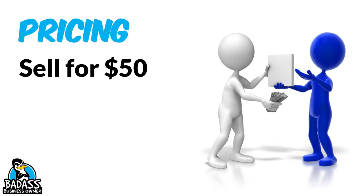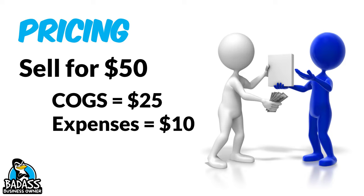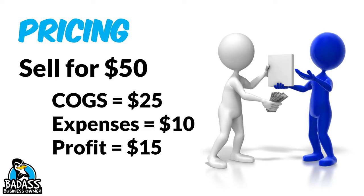Let's take a quick pricing example. Let's say you sell something for $50, your cost of goods runs you about $25, and you know that you need to set aside about $10 in expenses. Your P&L will tell you that because it will show you a percentage of what your expenses typically run. If their expenses ran 20%, that business owner knows $10 has to be set aside to pay expenses. Now they know that their profit on this particular item is going to be $15. If you watch the profit and loss and pricing videos, this will make a lot of sense.